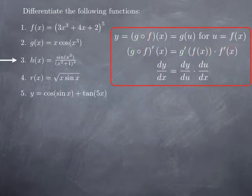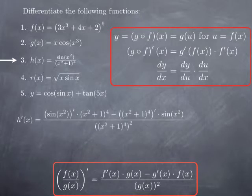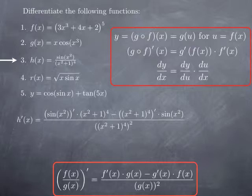The third function that we would like to differentiate is defined by sine of x squared divided by (x squared plus 1) to the fourth. It is a quotient of two functions, and therefore we're going to use the quotient rule that we recall here at the bottom. Formally applying the quotient rule, we get the derivative of the top — which is sine of x squared — multiplied by the bottom unchanged, (x squared plus 1) to the fourth, minus the derivative of the bottom, (x squared plus 1) to the fourth, multiplied by the top, sine of x squared, unchanged, all over the square of the bottom.